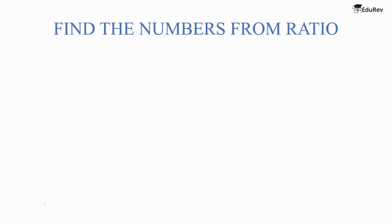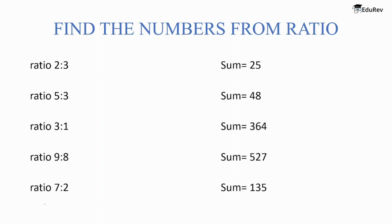Now let's find the numbers from a given ratio and their sum. For the first one, 2 plus 3 equals 5, and 5 units equals 25, so 1 unit equals 5. A gets 2 into 5 and B gets 3 into 5, giving A is to B equal to 10 is to 15.